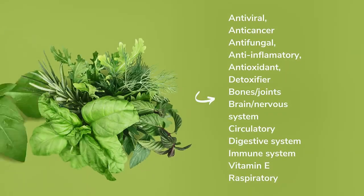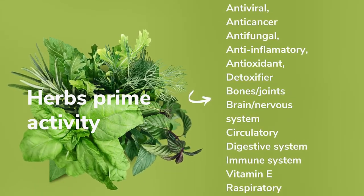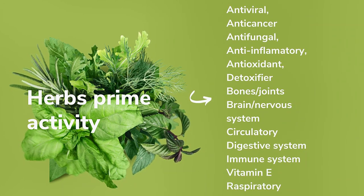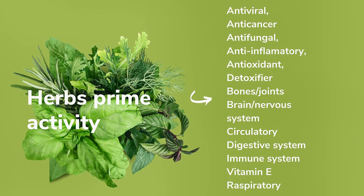The second property is anodynes — herbs that relieve and soothe pain by reducing the excitability of the nerves and nerve centers. Examples are skullcap, chamomile, echinacea, hops, lobelia, ginger, and valerian. The third property is anti-catarrals — herbs that eliminate mucus conditions. Examples are angelica, barberry, cayenne, comfrey, and wild cherry. The fourth property is antibiotic — herbs which inhibit growth of viruses and bacteria but help promote the body's own immunity. Examples are chaparral, echinacea, pau d'arco, goldenseal, myrrh, and garlic.